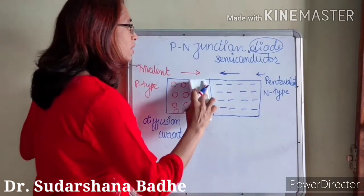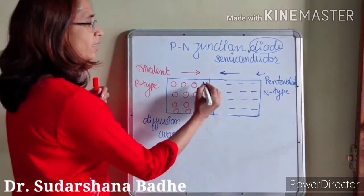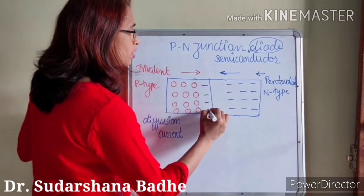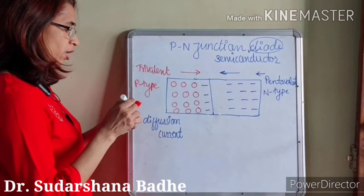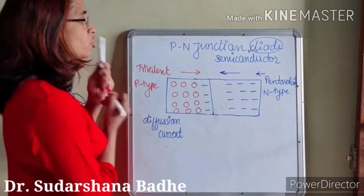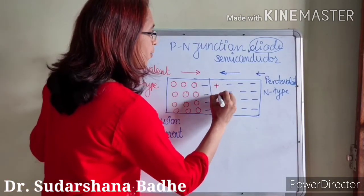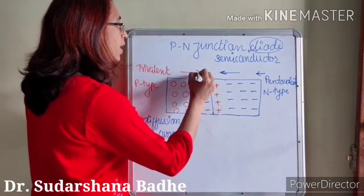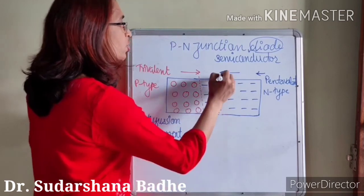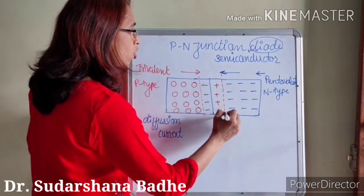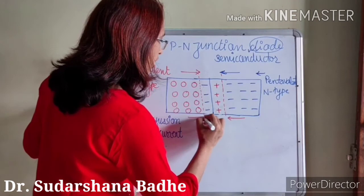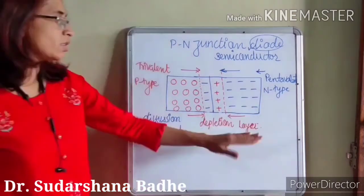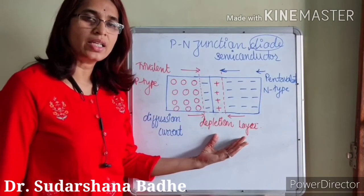At the junction, holes recombine with electrons and become negative ions. Similarly, electrons recombine with holes and become positive ions on each side. After some recombination there is a formation of a wall — this wall is called the depletion layer. This depletion layer behaves as an insulator.